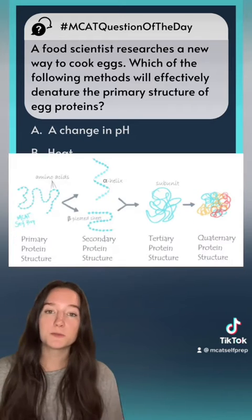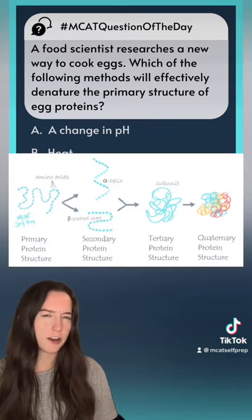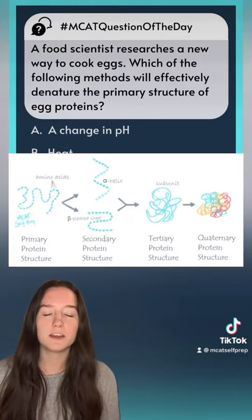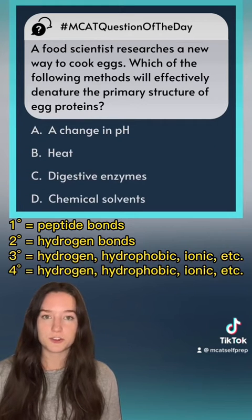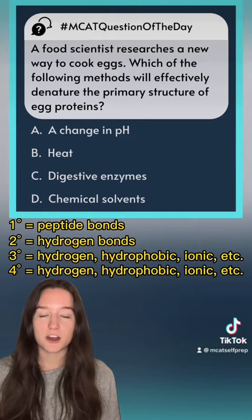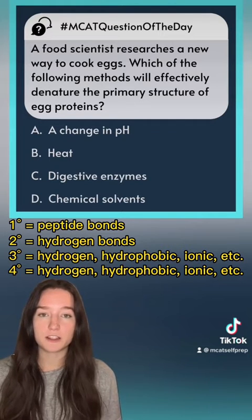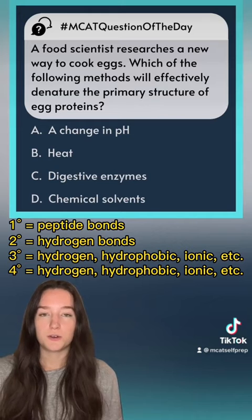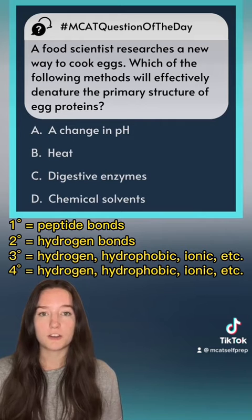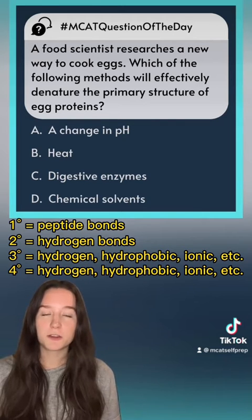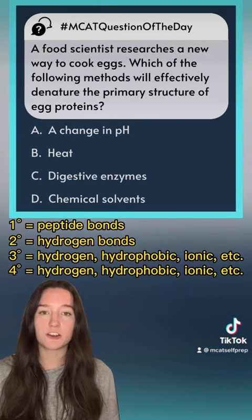These interactions can also be seen in the quaternary structure of the protein. Changing the pH of a protein's environment is going to be either adding or subtracting hydrogen ions. This is going to affect the R-chain's charge, so the ionic bonds existing within the protein structure are going to break. Changing the pH denatures the tertiary and the quaternary structures.